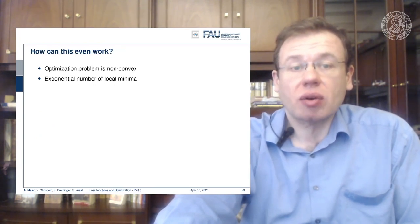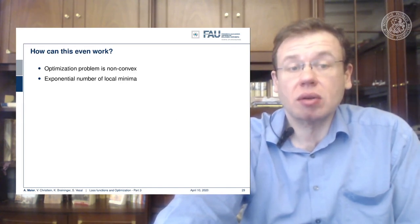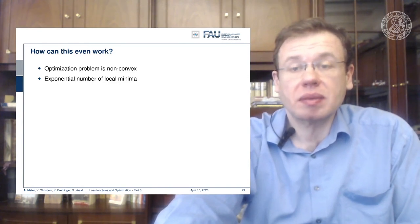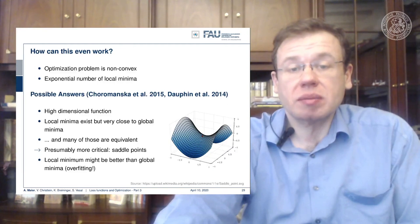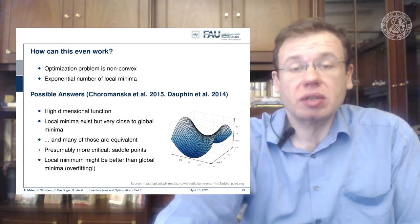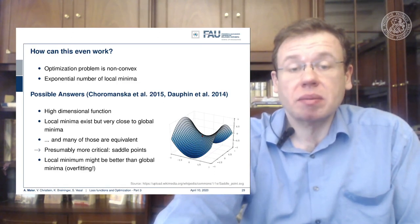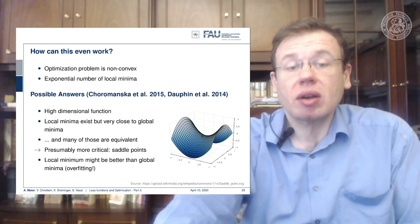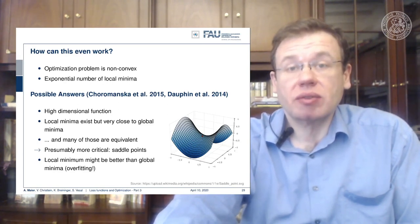The question is how can this even work when our optimization problem is non-convex and there's an exponential number of local minima? An interesting paper from 2014–2015 shows that the networks we typically work with are high-dimensional functions with many local minima, but the interesting thing is that those local minima are close to the global minimum, and actually many of those are equivalent.